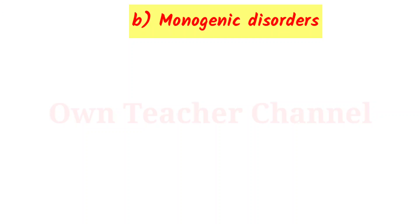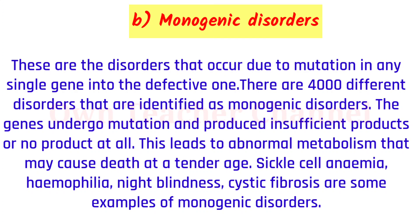Monogenic disorders: these are disorders that occur due to mutation in any single gene. There are 4,000 different disorders identified as monogenic disorders. The genes undergo mutation and produce insufficient products or no products at all, leading to abnormal metabolism that may cause death at a tender age. Sickle cell anemia, haemophilia, night blindness, and cystic fibrosis are some examples of monogenic disorders.